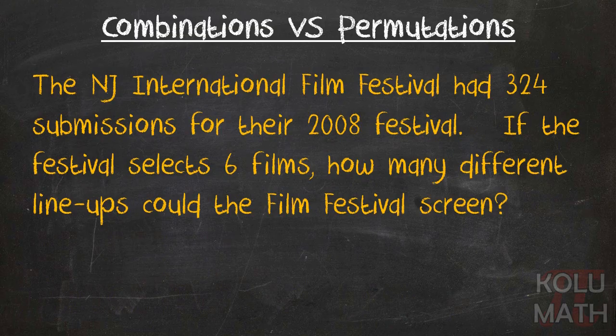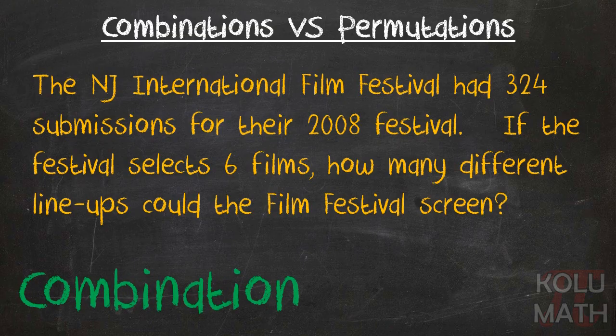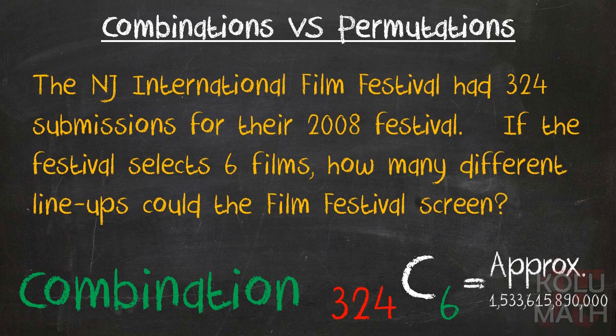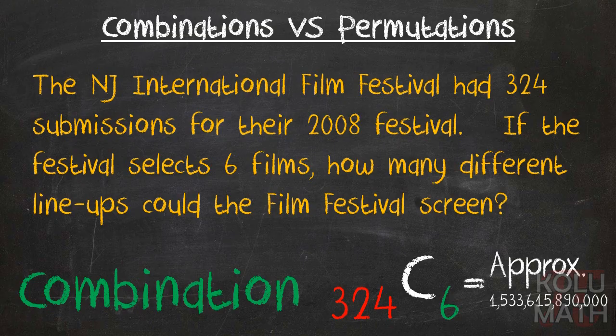On to another one. The New Jersey International Film Festival had 324 submissions for their 2008 festival. If the festival selects six films, how many different lineups could the film festival screen? Does it matter what order those guys are selected? No, not at this point. They're just trying to get into the contest, so it doesn't really matter. It's a combination. And we can go ahead and use 320C6, or 1,533,615,890,000. That's a lot of different combinations.